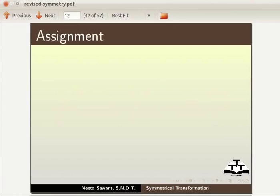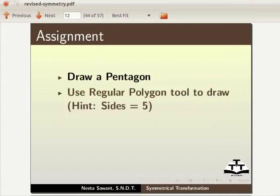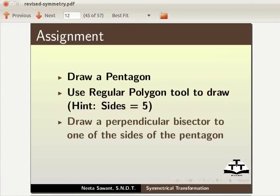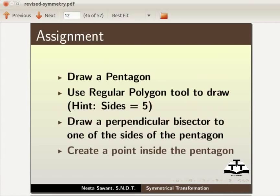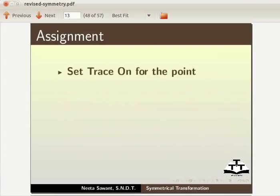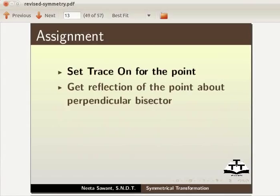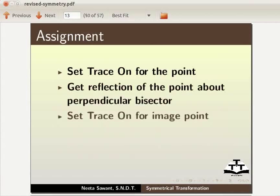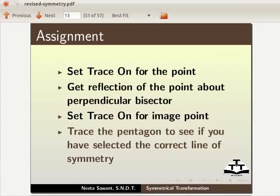As an assignment, I would like you to draw a pentagon. Use regular polygon tool to draw, hence side is equal to 5. Draw a perpendicular bisector to one of the sides of the pentagon. Create a point inside the pentagon. Set Trace On for the point. Get reflection of the point about perpendicular bisector. Set Trace On for the image point. Trace the pentagon to see if you have selected the correct line of symmetry.